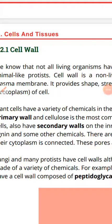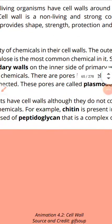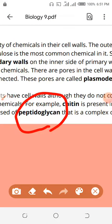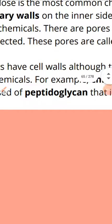Now, bacteria also consist of a cell wall — but does that make bacteria a plant? No. Bacteria is a prokaryote, not a plant. Why does bacteria have a cell wall and yet we don't relate it to plants? Because the bacterial cell wall is not composed of cellulose. The bacterial cell wall is composed of peptidoglycan — P-E-P-T-I-D-O-G-L-Y-C-A-N. Peptidoglycan is a conjugated molecule, meaning two small organic molecules combined together.